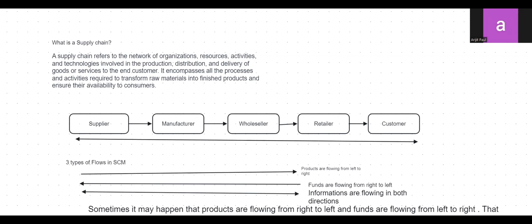From the supplier, we get raw materials or component parts sent to the manufacturer. The manufacturer transforms those raw materials or components into finished goods and sends them to the wholesaler. The wholesaler sells the finished goods to the retailer, and the retailer finally delivers the product to the customer when demand arises.